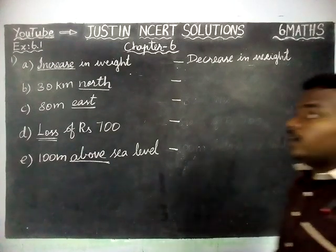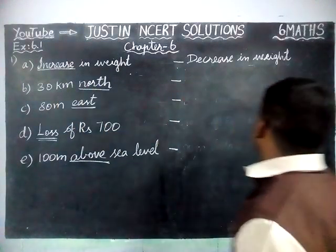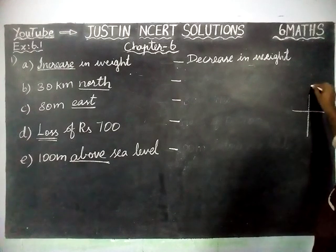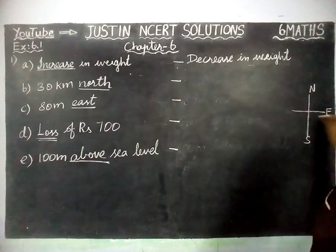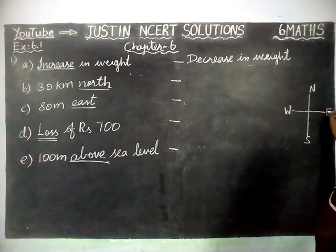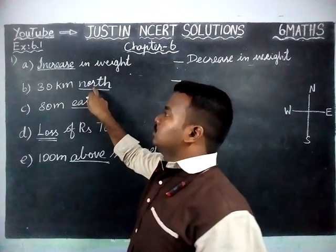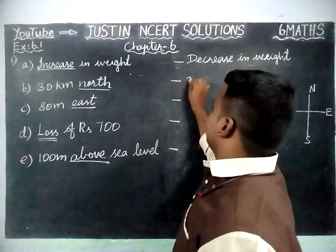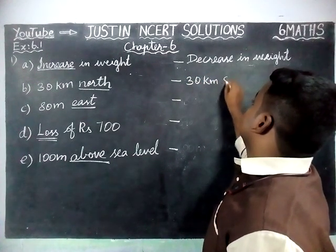Part B: 30 km north. If you are drawing a map, the directions are north, south, east, and west. The opposite of north is south, and the opposite of east is west. So for 30 km north, the opposite is 30 km south.